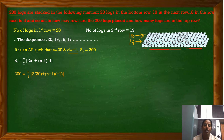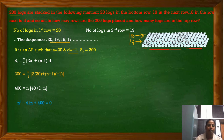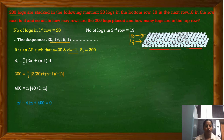Cross-multiplying, this 2 to the other side gives 400, and we are left with n into 40 plus 1 minus n. After multiplying out: n into 40 is 40n, n into plus 1 is n, and n into minus n is minus n squared. Transferring all terms to one side, we have n squared minus 41n plus 400 equals 0.